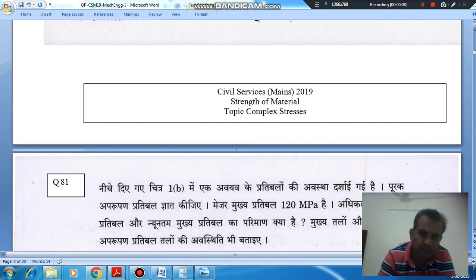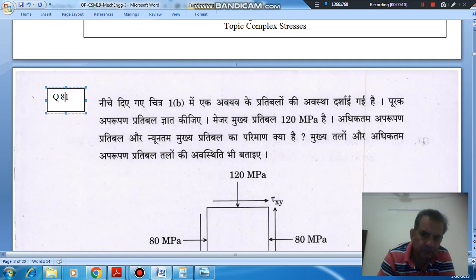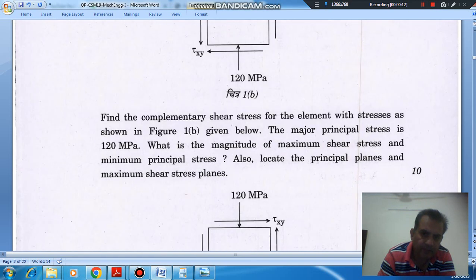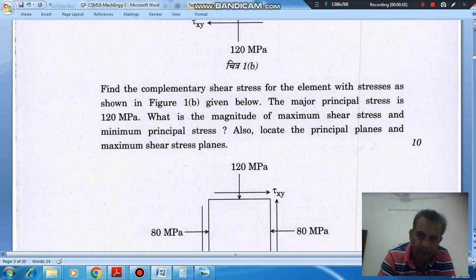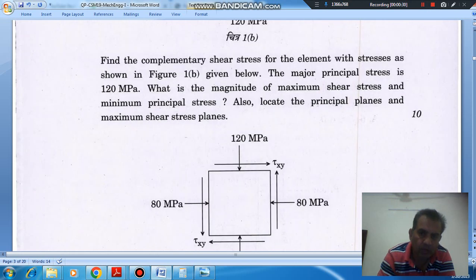Question number 81 from Civil Services Mains 2019: Find the complementary shear stress for the element with stresses as shown in Figure 1b given below. The major principal stress is 120 MPa. What is the magnitude of maximum shear stress and minimum principal stress? Also locate the principal plane and maximum shear stress plane.